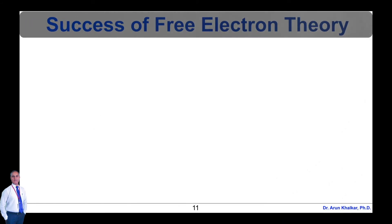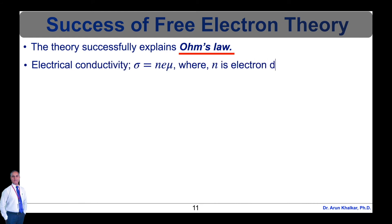Now let's see the success of free electron theory. The free electron theory was successful in explaining properties of metals as below. The theory successfully explains Ohm's law and electrical conductivity of metal. The electrical conductivity sigma equals N e mu, where N is the electron density, e is charge on electron, and mu is the mobility of electrons.